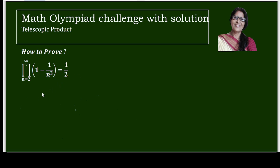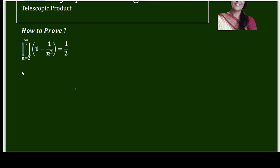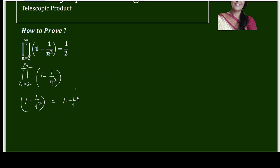First, I am taking the finite product. Let us write this as the product from n equals 2 to N of (1 - 1/n²). We know that (1 - 1/n²) can be written in product form as (1 - 1/n) times (1 + 1/n).